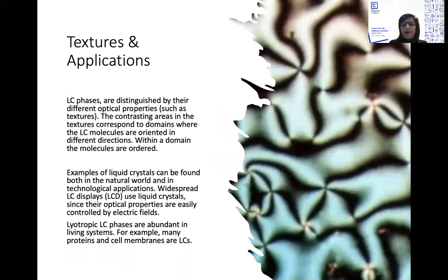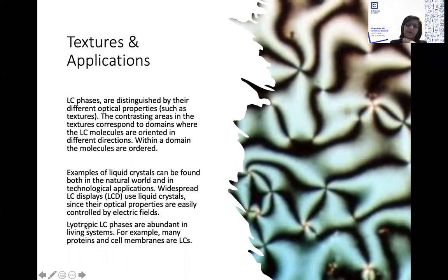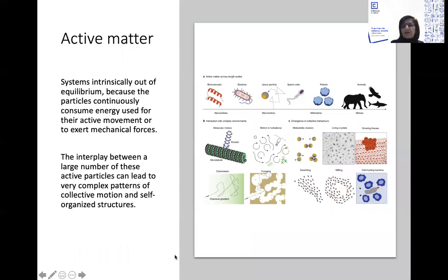Here you can see domains of aligned liquid crystalline molecules — I think this is the nematic — and where you see black you see the disordered phase with some defects. Besides displays, liquid crystals also appear in your own body: some proteins and cell membranes are liquid crystalline. Finally, you can add activity to these particles and encounter all sorts of other problems with similar or different order at larger or smaller length scales. Thank you very much.